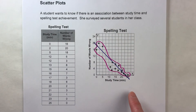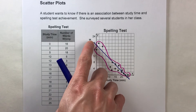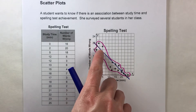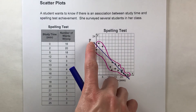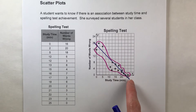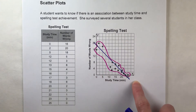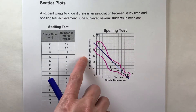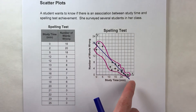What does it tell me? Well, this line has a negative slope — it's going down. So there is a negative association, meaning as study time increases, the number of words wrong decreases.